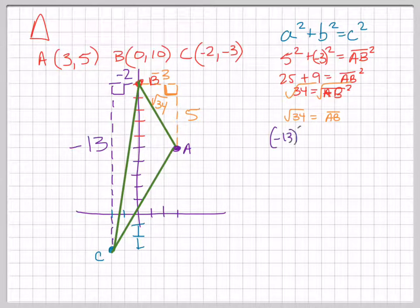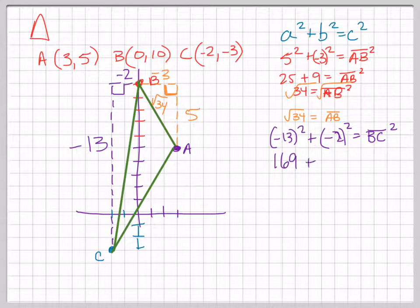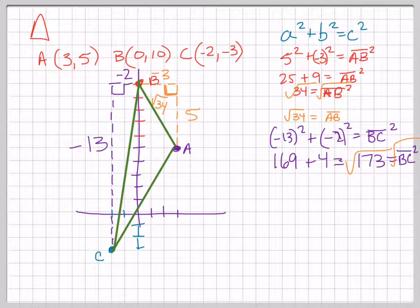So I'm going to do negative 13 squared plus negative 2 squared, and it's going to equal line segment BC squared. So negative 13 squared becomes positive, so 169, and then negative 2 squared is positive 4, which makes that 173 is BC squared. And then take the square root of that, which is square root of 173.